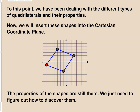To this point we've been dealing with the different types of quadrilaterals and their properties, and we've seen that many of these shapes have a lot of different properties. Those properties can show up in a lot of different ways. But when they show up in a graph, it changes the feel of it. The properties are still there, but we look for them in a different way.